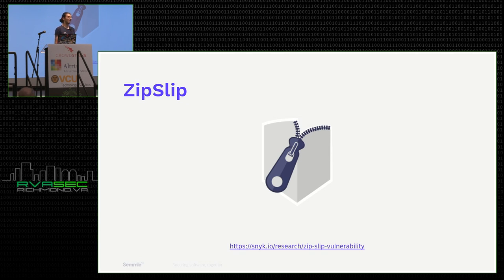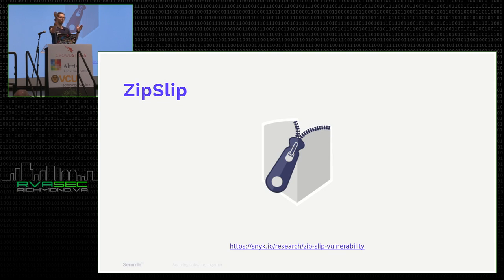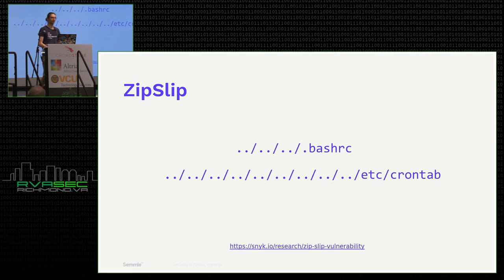Zip files are effectively a list of file paths paired with the contents of those files. File paths are simply strings — just text — and there isn't really any more structure than that in Zip files. When you have directories in Zip files, it's not really a tree-like structure, it's just a list. What that means is that these paths actually have path components like slashes, and you could potentially put path traversal components in there — such as dot dot slash. That goes to the parent directory.